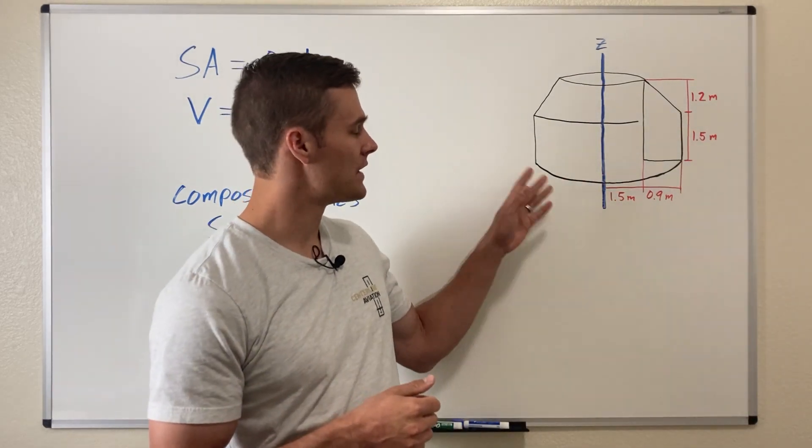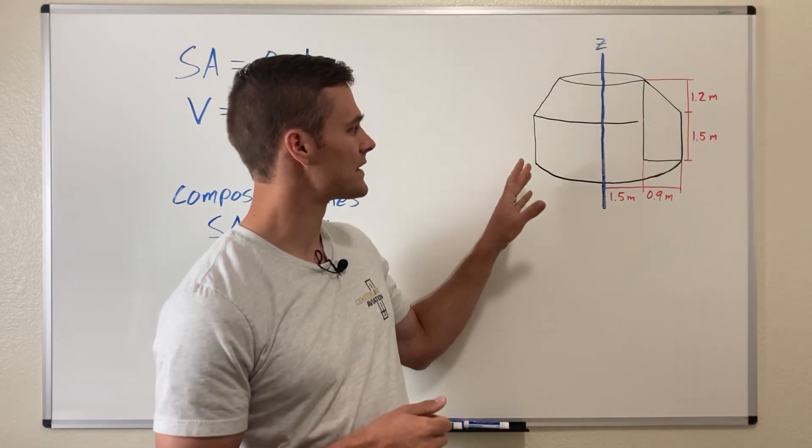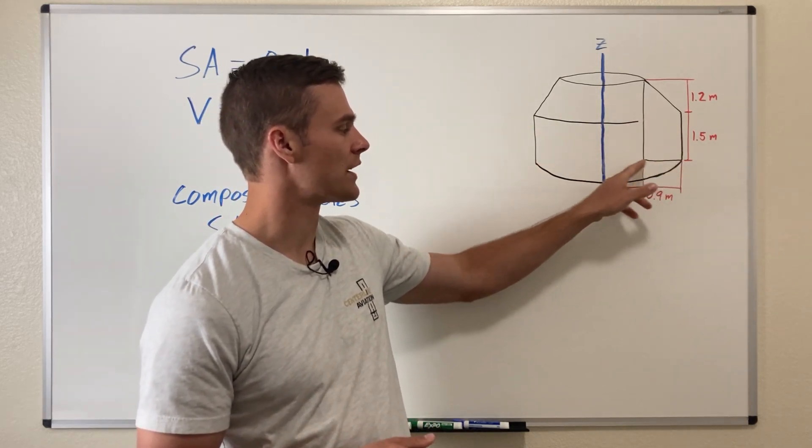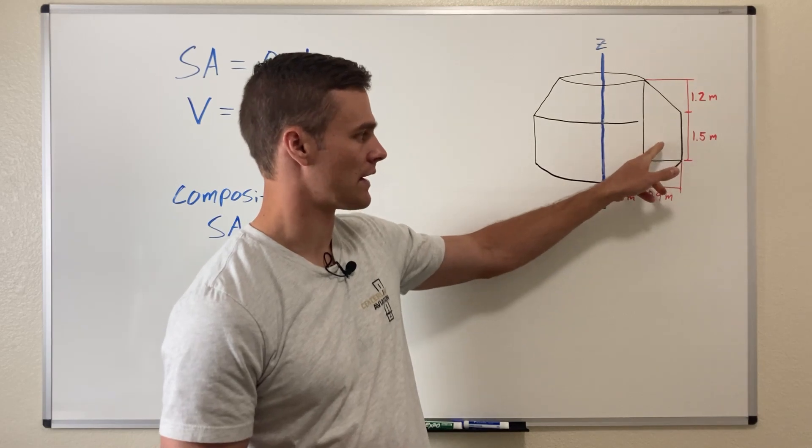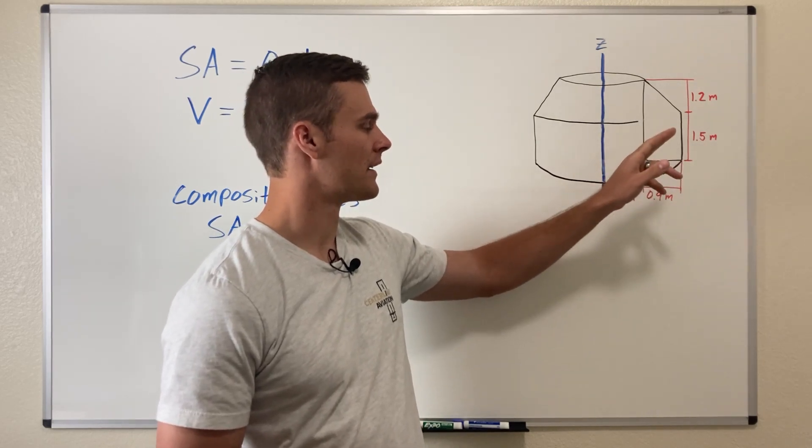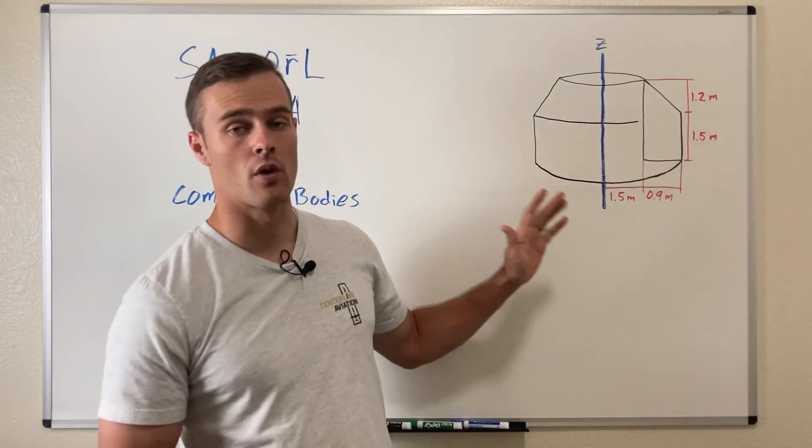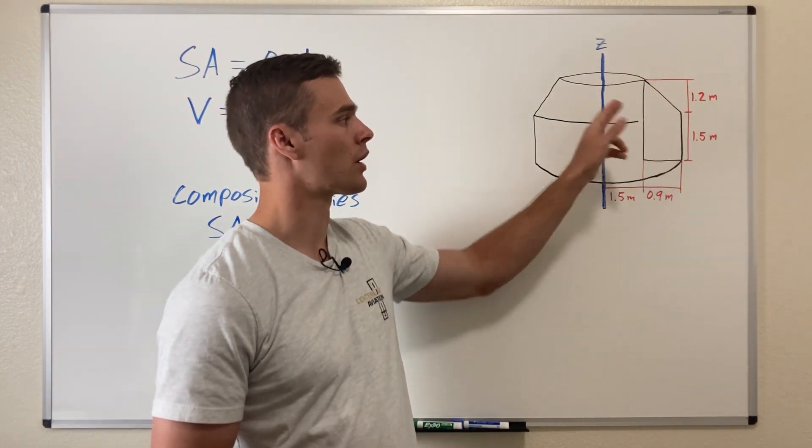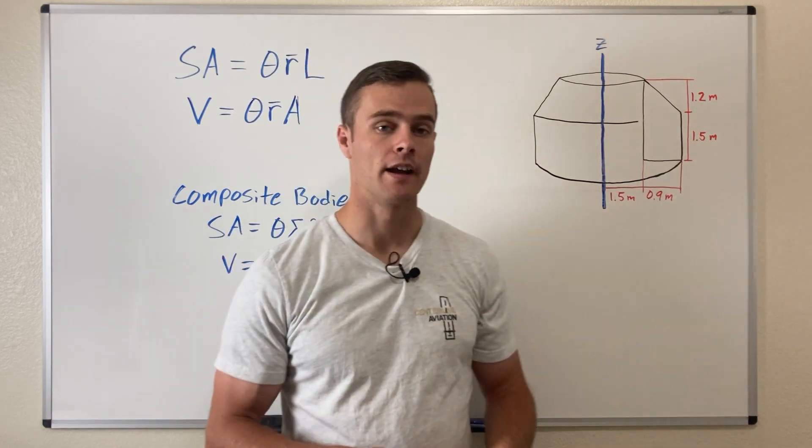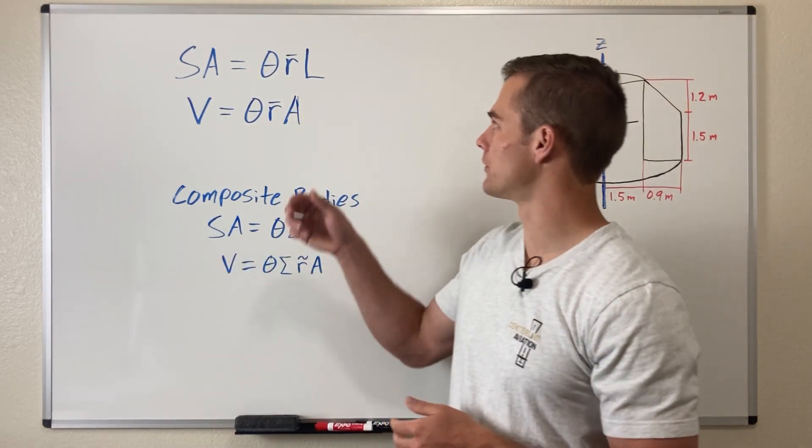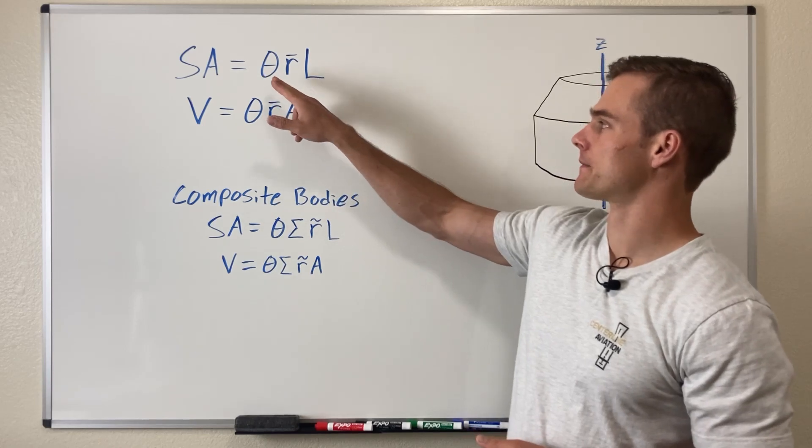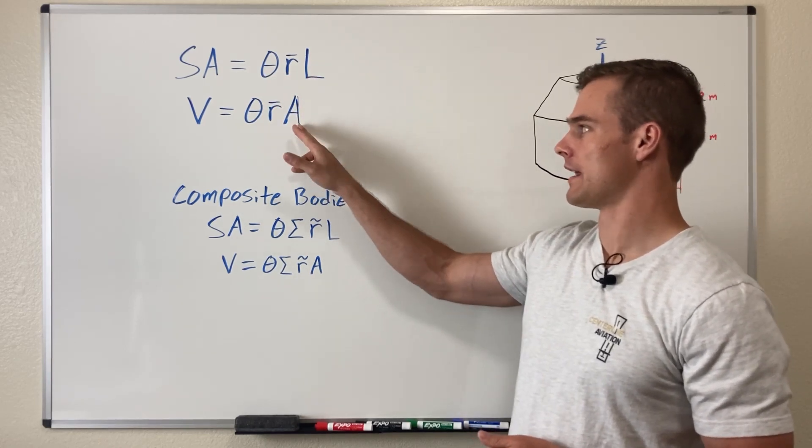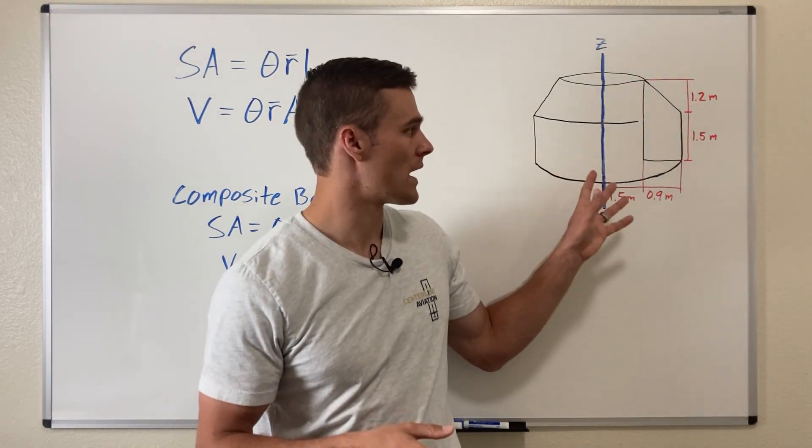I'll be going over this example problem. It's pretty simple because we only have straight lines that make up this generating area. With a problem like this, we won't have to integrate. If the lines were curved instead of straight, we would probably need to integrate to find the centroid of the line as well as the length and area. But in this case, we won't have to.